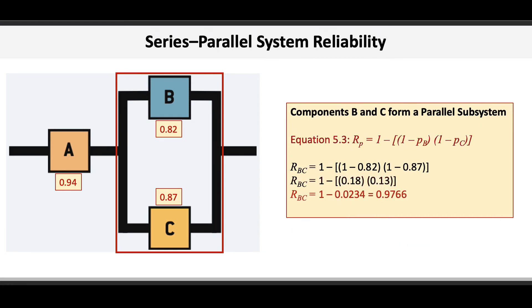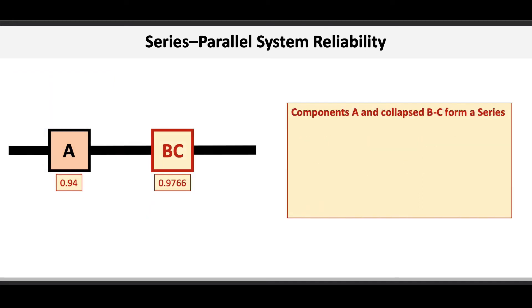The formula further reduces to 1 minus 0.0234, which equals 0.9766. Here we can conclude that this parallel subsystem has a reliability of 97.66%. Now we are left with two elements in series, component A and the reduced subsystem BC.